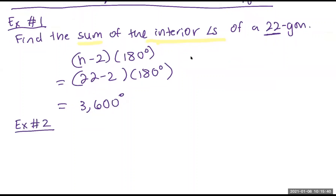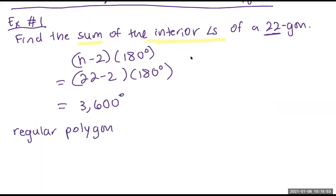Before you write example number two, let me define a word: 'regular' — as in a regular polygon. If you know the definition, great; if you don't, what might you think regular means? Like, if a polygon is described as regular, what do you think that word means? Take a guess — it's okay if you don't know the definition.